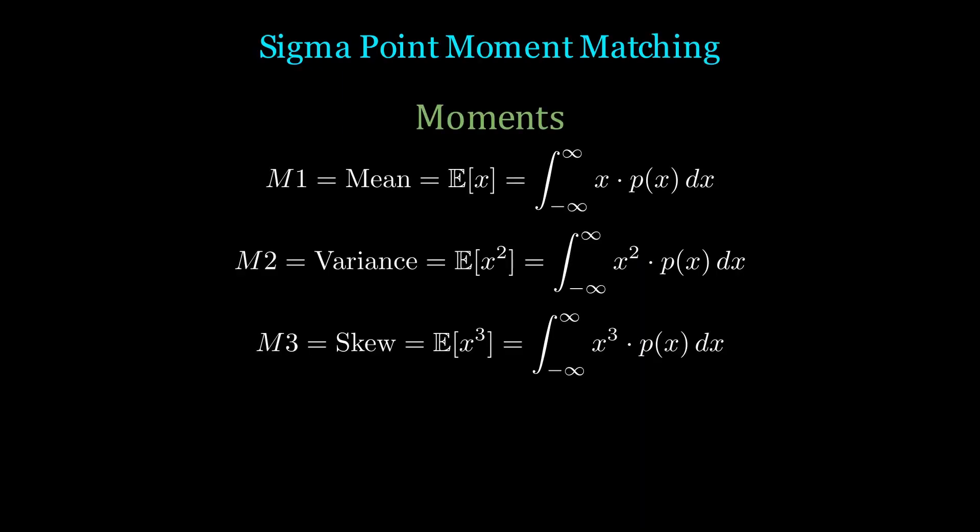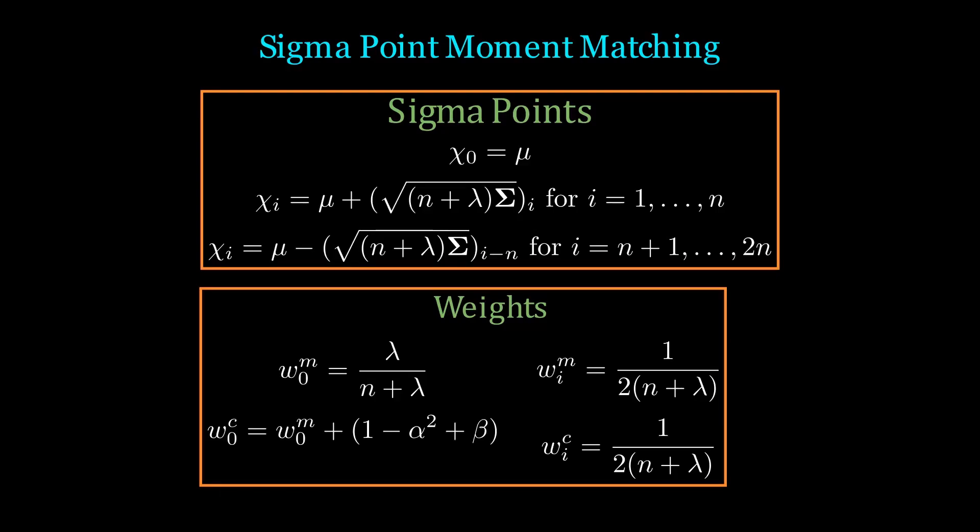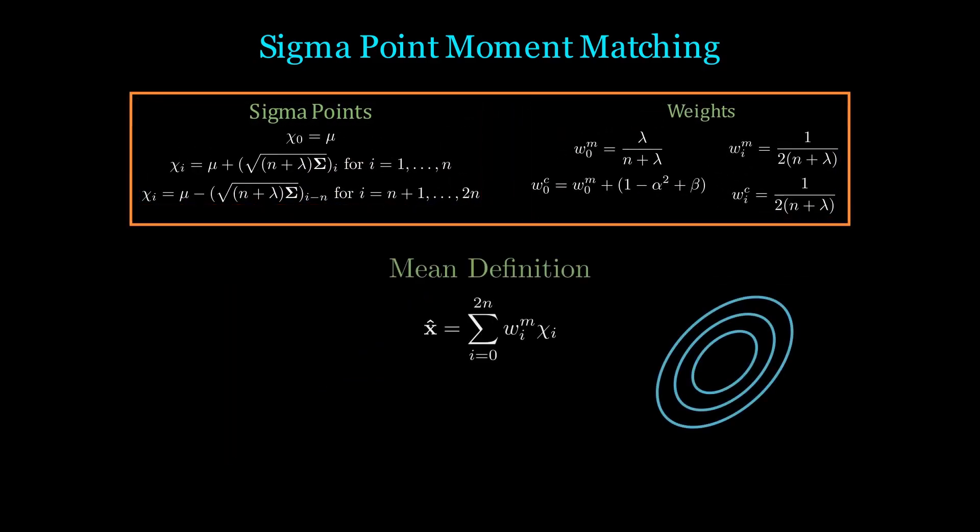To pick the weights of our sigma points, we want to perform sigma point matching. The two moments we care about the most are the first and second moments, which are the mean and covariance. We choose our weights in the following way. Note that there are four weights, two for the covariance and two for the mean because we distinguish the zeroth sigma point from all the others. To show you why, let's compute the mean of our sample points. The symmetric nature of how we picked our points cancels out to equal the mean.